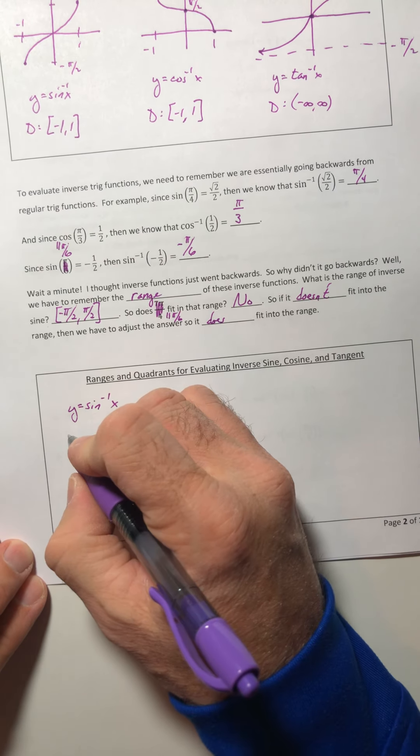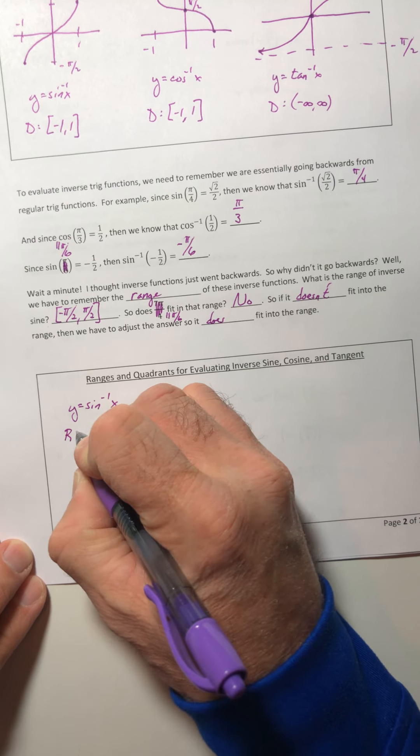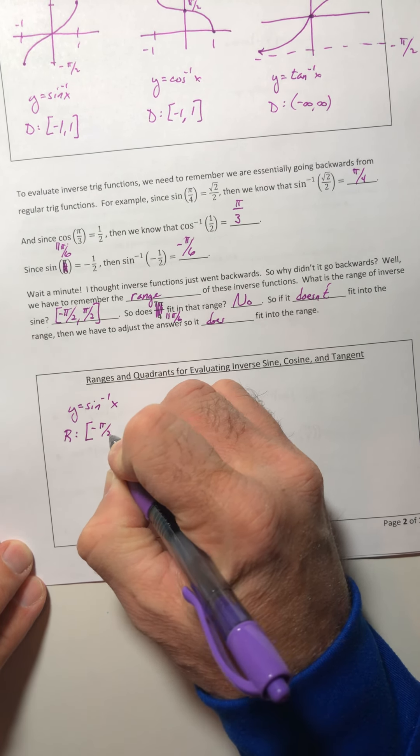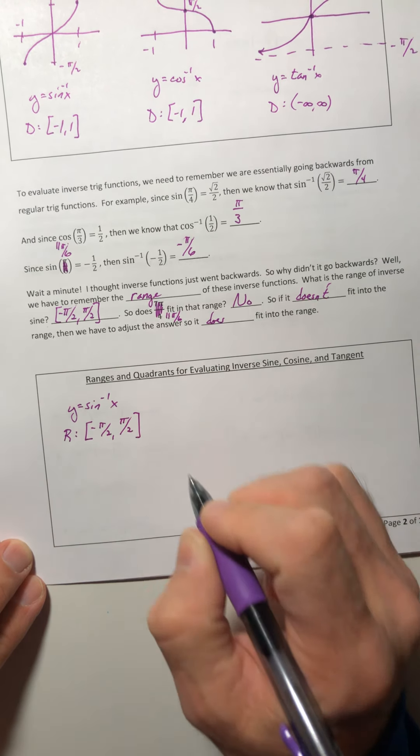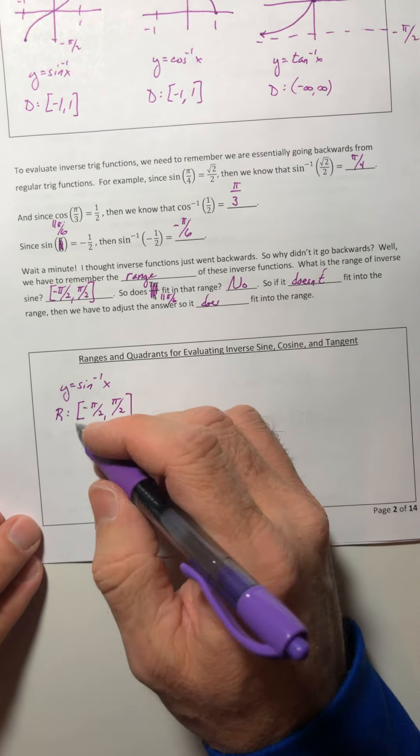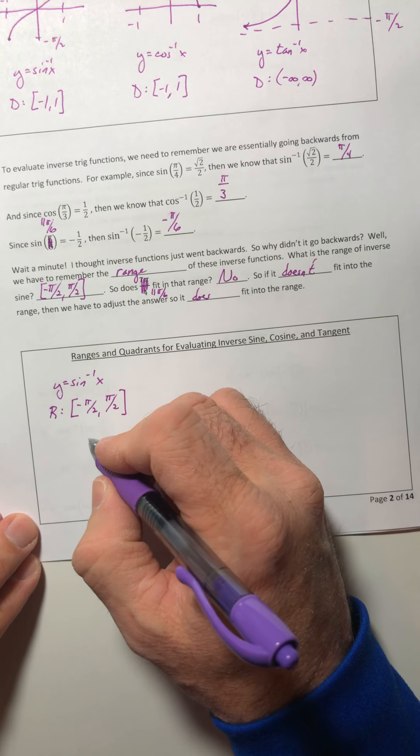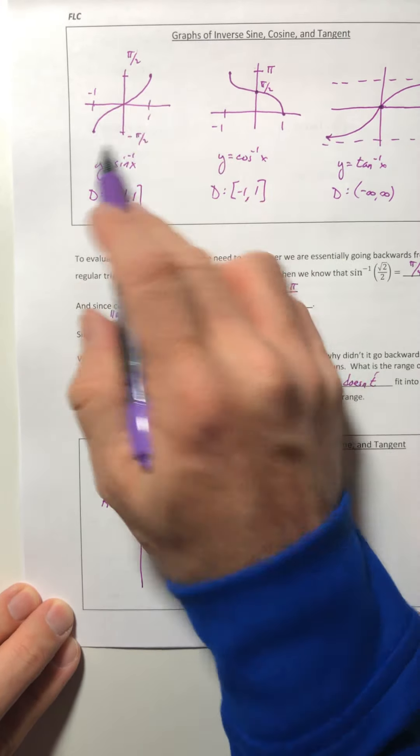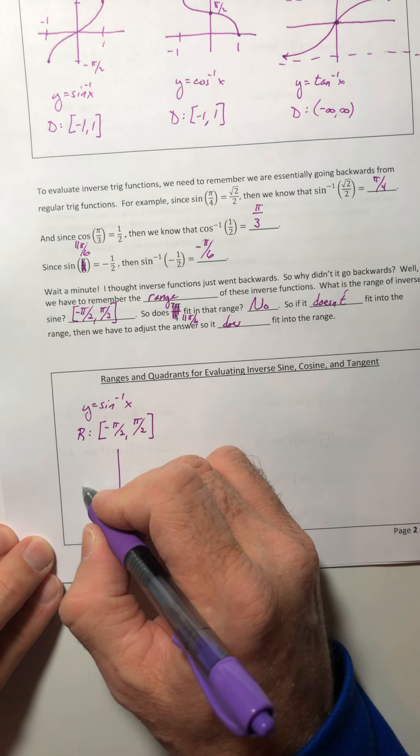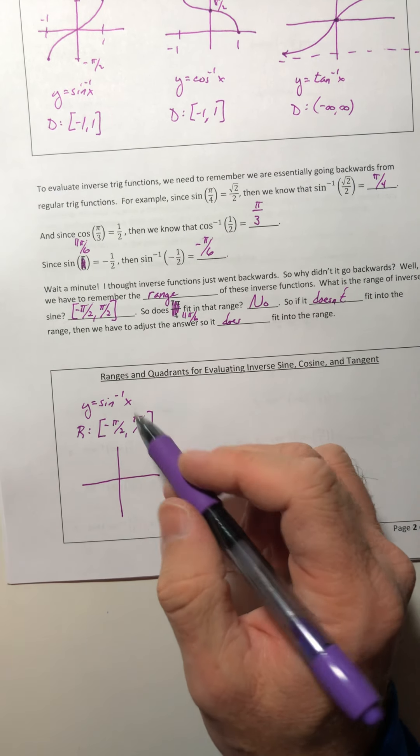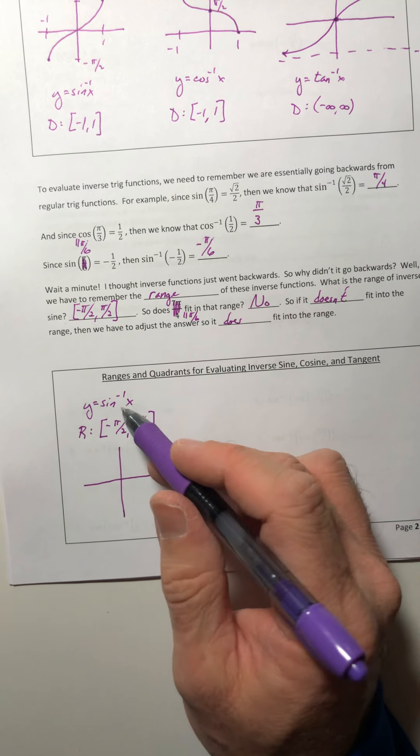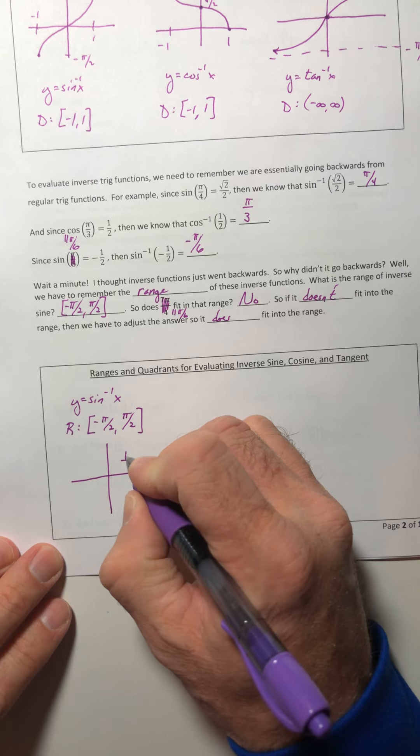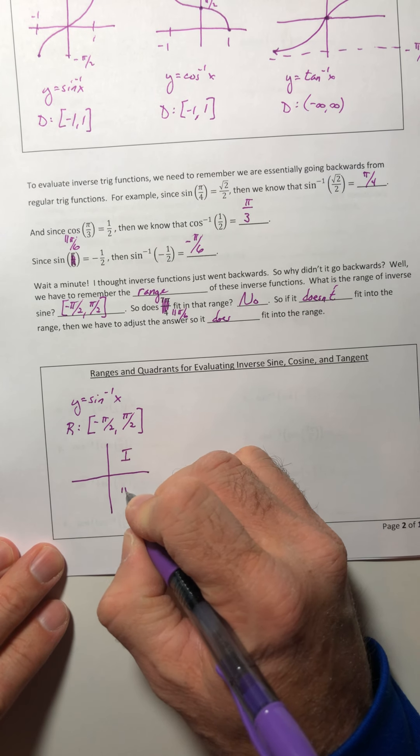So for inverse sine, the range I said earlier was negative π over 2 to π over 2. So on the unit circle, or where you would put the triangles, not the actual graph we're not talking about this, we're talking about what sections on the unit circle would have actually matched up to this. Well, that would be quadrants 1 and quadrant 4.